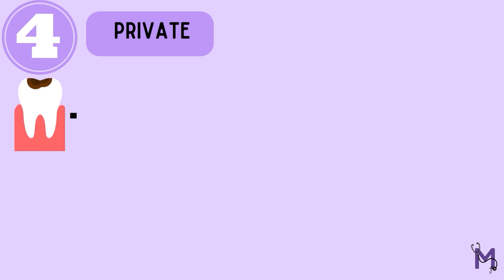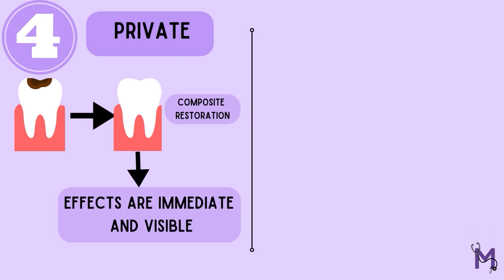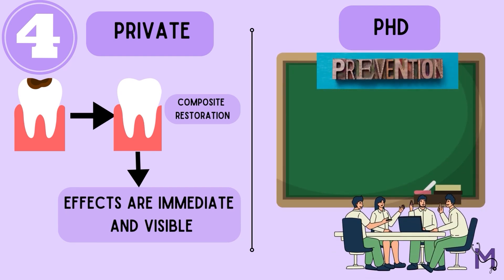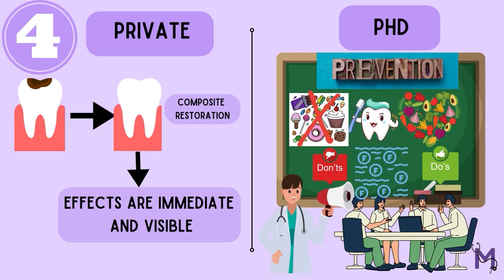Next, a patient usually visits your clinic after the occurrence of a disease state — let us say dental caries. You treat their problem with a restoration as deemed appropriate and the effects are almost immediate and visible. But in the case of public health dentistry, we are more concerned about preventing the occurrence of a disease, which proves to be beneficial in the long run. For example, to prevent dental caries in a population, we can educate patients regarding dos and don'ts like eating healthy food and less sugary food, alongside starting water fluoridation programs wherever necessary.